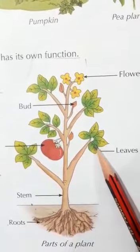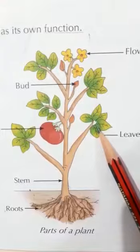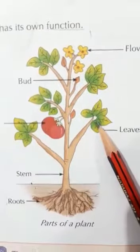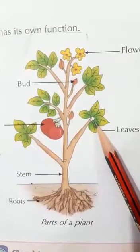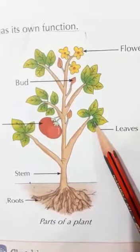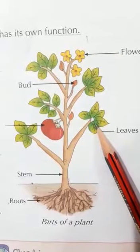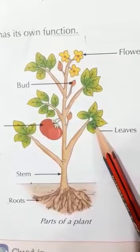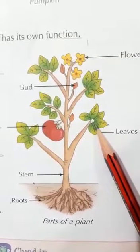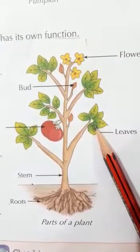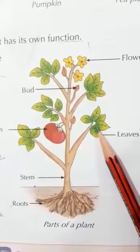Leaves make food for the plants. They are mostly green in color. Green leaves make food in the presence of sunlight, air, water and minerals.